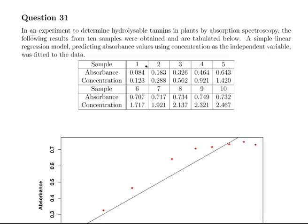In this presentation we are going to look at linear models. In an experiment to determine hydrolysable tannins in plants by absorption spectroscopy, the following results were obtained from 10 samples tabulated below. A simple linear regression model predicting absorbance values using concentrations was fitted to the data.